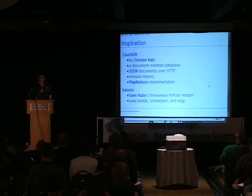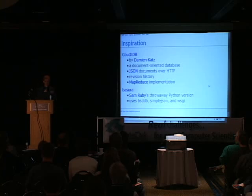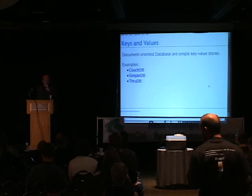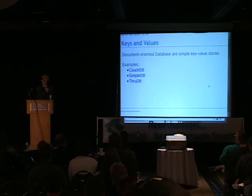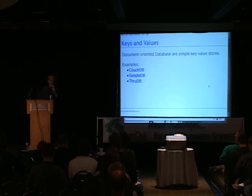I was inspired by Sam Ruby, who wrote a throwaway version of CouchDB called Basura, which uses standard types in Python, simple JSON, and Whiskey. I thought it was neat. So what's a document-oriented database? It's just a key-value store — a dictionary. We're storing dictionaries in a dictionary. Some examples are CouchDB, SimpleDB which is Amazon's web service version, and ThreeDB which is a Facebook project.